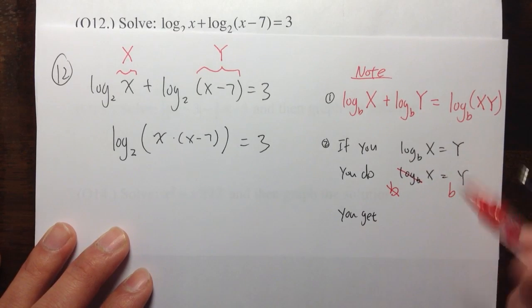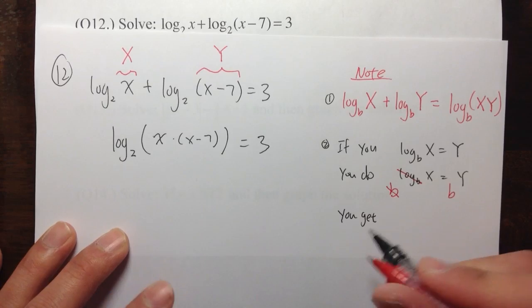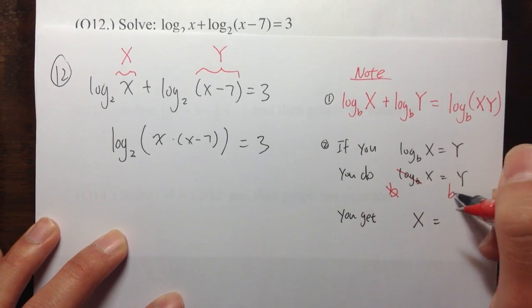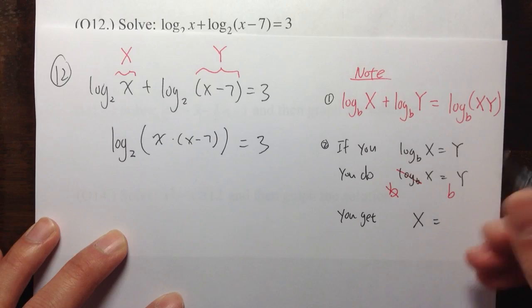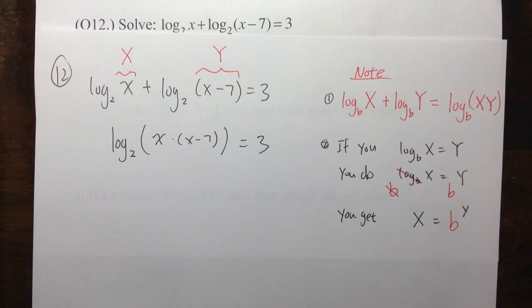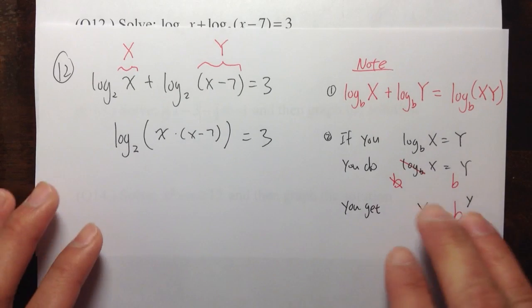Then you will get the b and then log base b cancel out. So that's the nice thing about log and power. They are inverse of each other. They cancel each other out. Then we get X is equal to b to the Y. So b to the Y. And that's what we are going to apply right here.